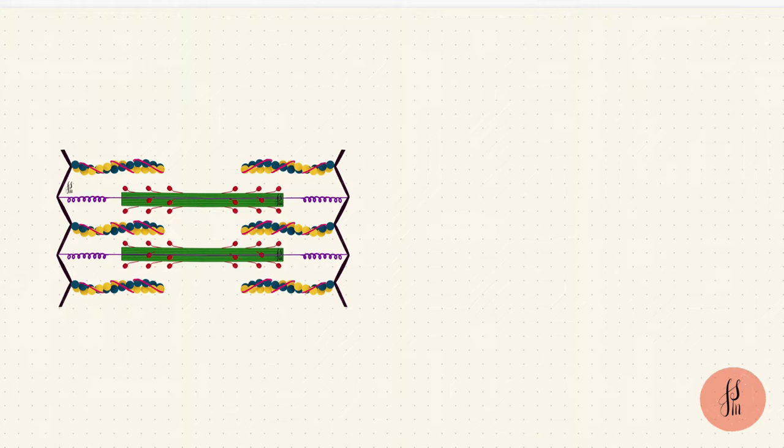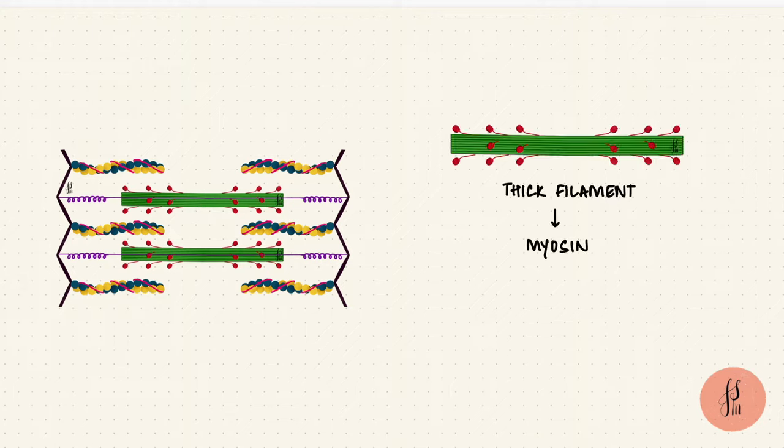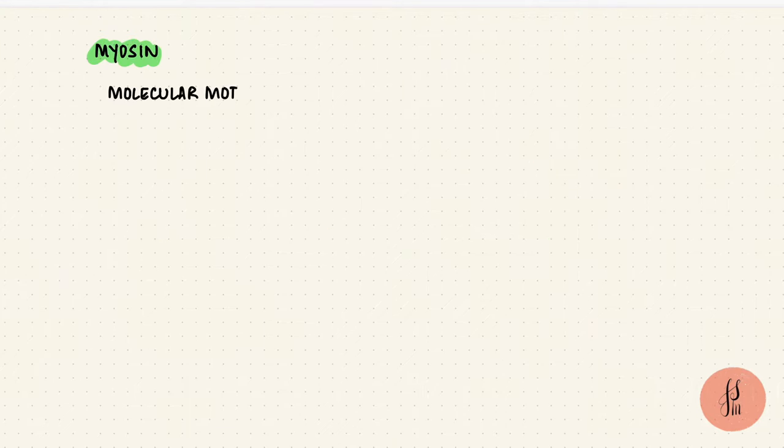Let's look at the filaments. The thick filaments are made up of myosin molecules and in skeletal muscle that's mostly myosin type 2. Myosin is a molecular motor protein.